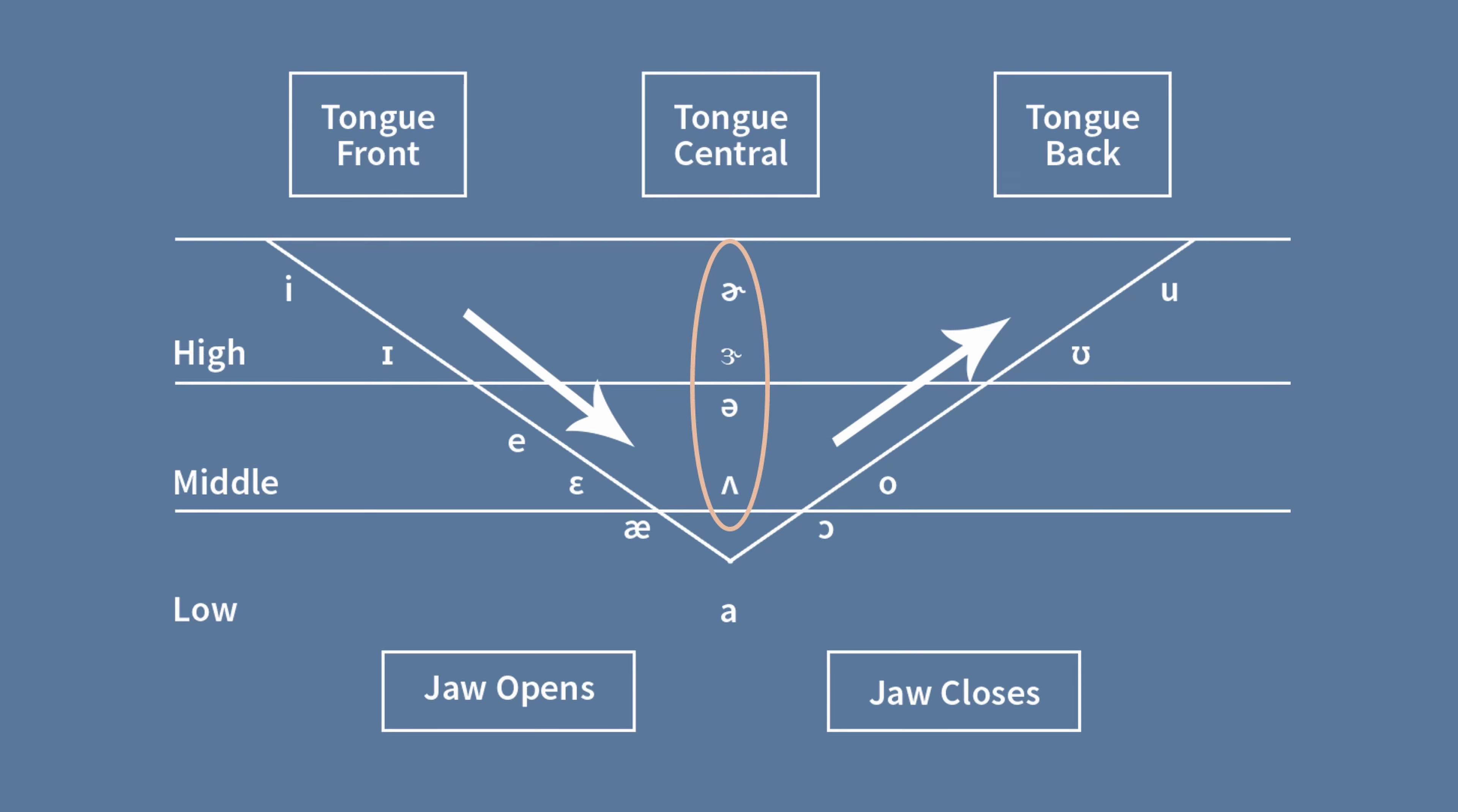Now the four symbols at the center of the triangle are called schwa sound. In reality, the first two symbols have the same sound. What differentiates them is the stress or emphasis they give in a word.